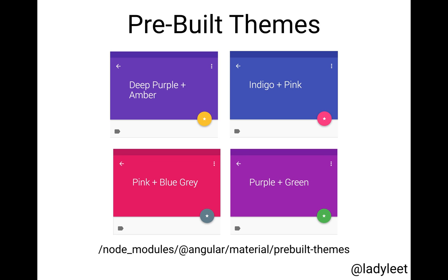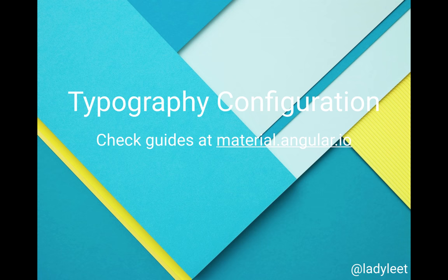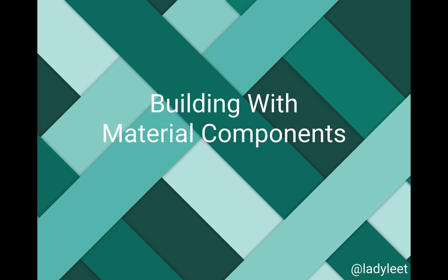Angular Material itself ships with four pre-built themes for you: Deep Purple and Amber, Indigo and Pink, Pink and Blue-Grey, and Purple and Green. You can find these in your Node Modules folder. We'll be importing directly from the Node Modules folder into styles.css if we're going to use the pre-built themes. Custom themes are pretty easy to create as well — check out the guides at material.angular.io. Same thing with the typography configuration.